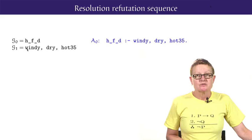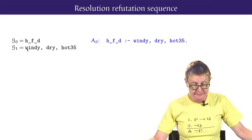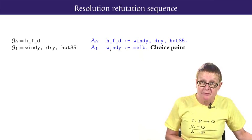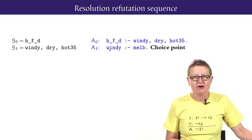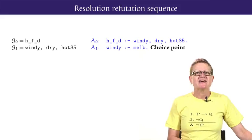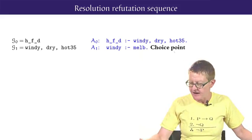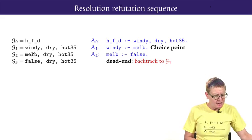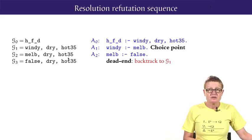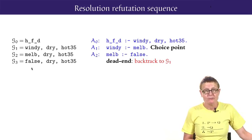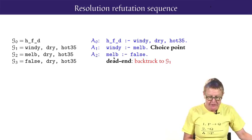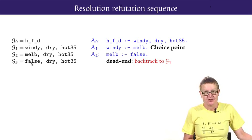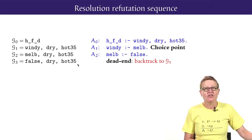In goal G1, the first atom is windy so it is processed first. Prolog looks for all the program clauses with windy as head. There are two of them. So Prolog starts with the first one in program order but also marks that there is a choice point meaning that there is another clause to try with windy as head. The first one is windy if Melbourne. So the resolvent goal G2 will be Melbourne, dry and hot35. The first atom in G2 is Melbourne. So Prolog looks for all the program clauses with Melbourne as its head. There is only one of them. Melbourne if false. The resolvent goal G3 then has the constant false as its first entry. This is not allowed and signals a dead end on this line of reasoning.